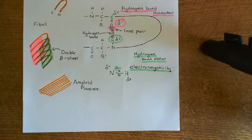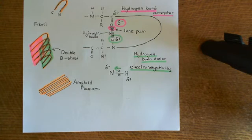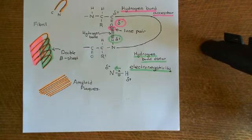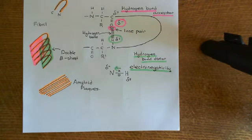Welcome back to this next video in which we are discussing Alzheimer's disease and Alzheimer's disease medications. We are in the process of discussing the actual neurodegenerative process that occurs in Alzheimer's disease, which is marked by these two cardinal features: the amyloid plaques and then the neurofibrillary tangles.